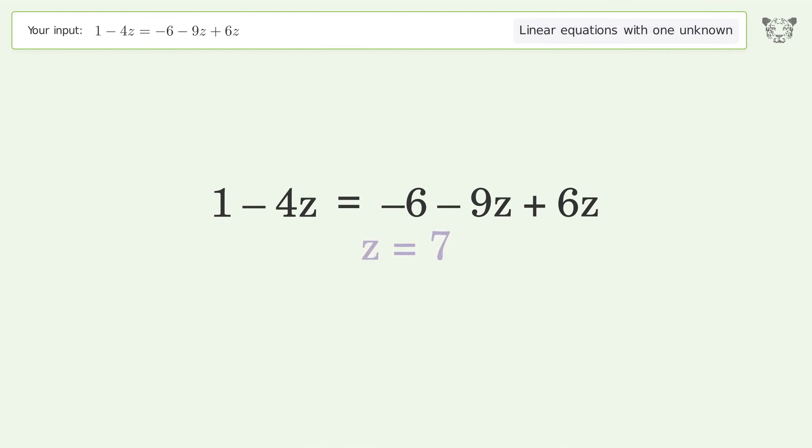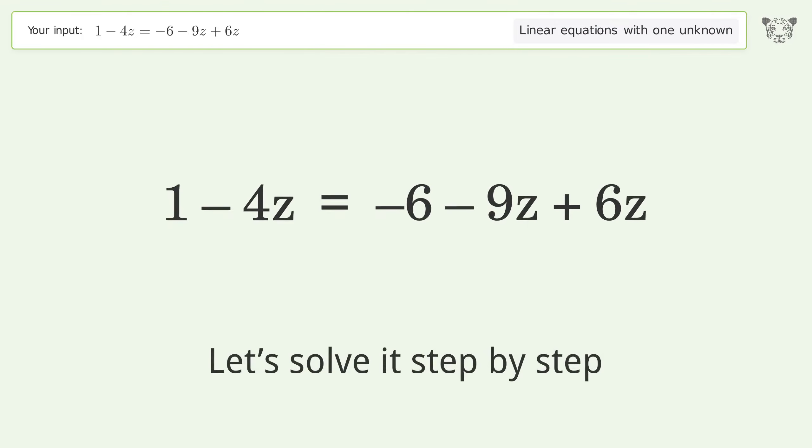You asked Tiger to solve this linear equation with one unknown: 1 - 4z = -6 - 9z + 6z. The final result is z equals 7. Let's solve it step by step.